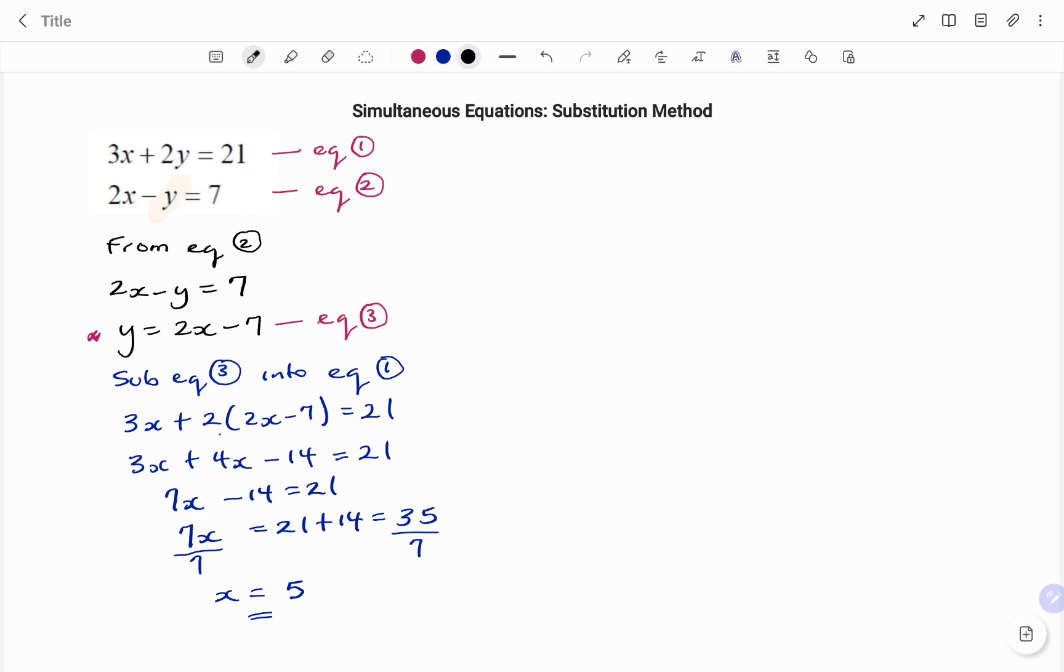To get the value of y, I'm going to substitute x equals 5 into equation 3. And equation 3, as shown, states that y equals 2x minus 7. I know that my x is 5, so I have y equals 2 multiplying 5 minus 7. That will be 10, 2 times 5, 10, minus 7. Therefore, the value of y will be 10 minus 7, which is 3. Thanks for watching.